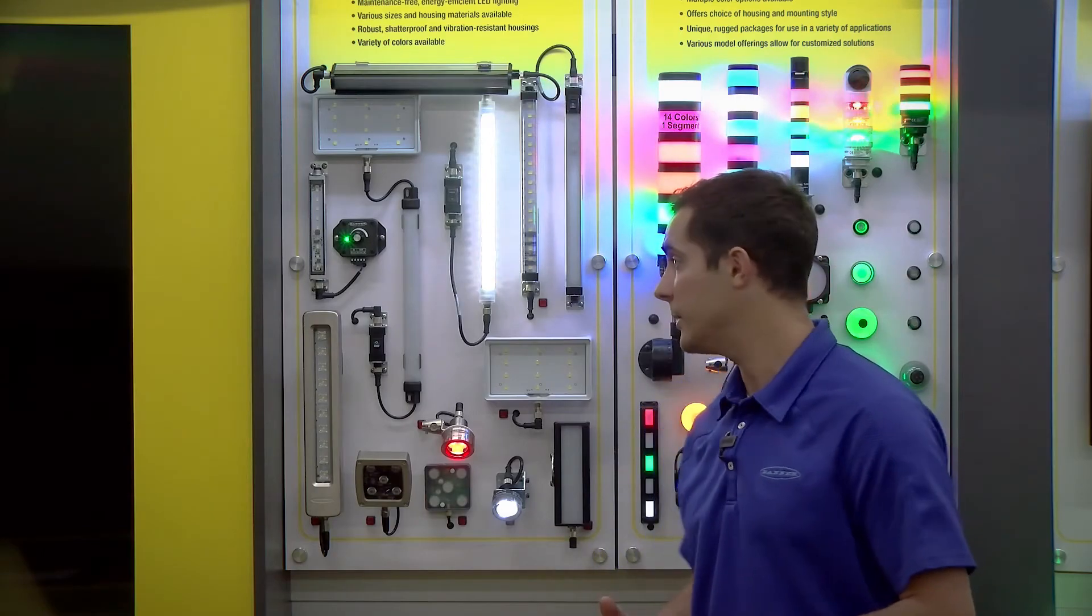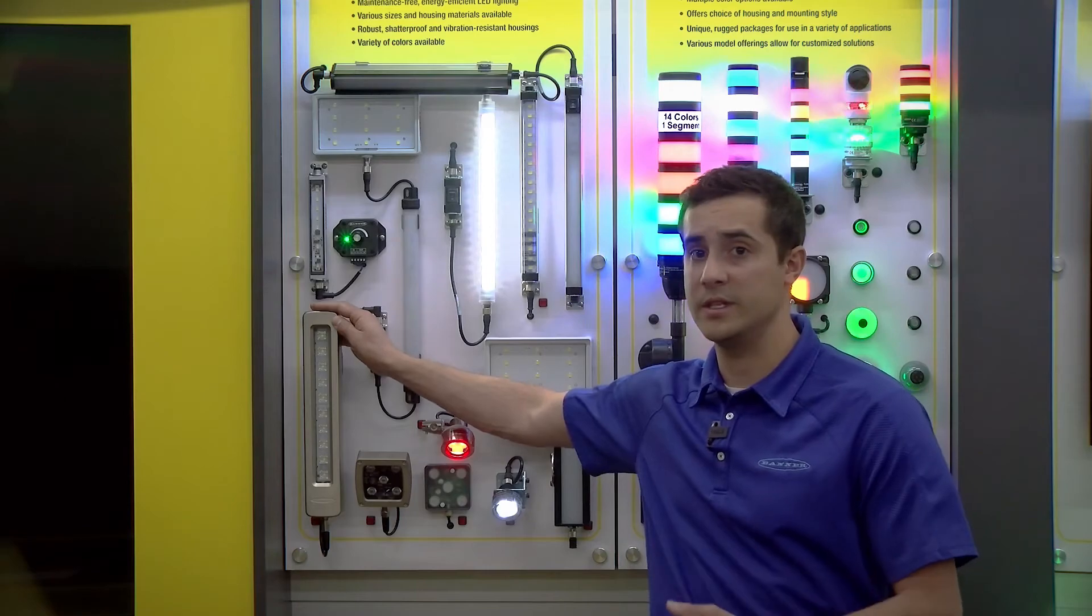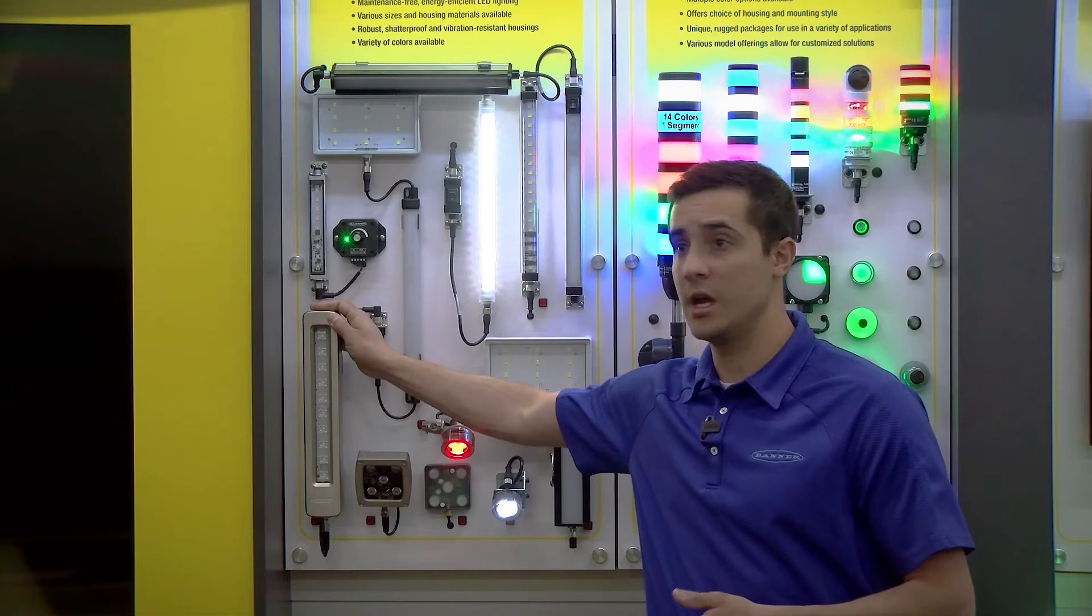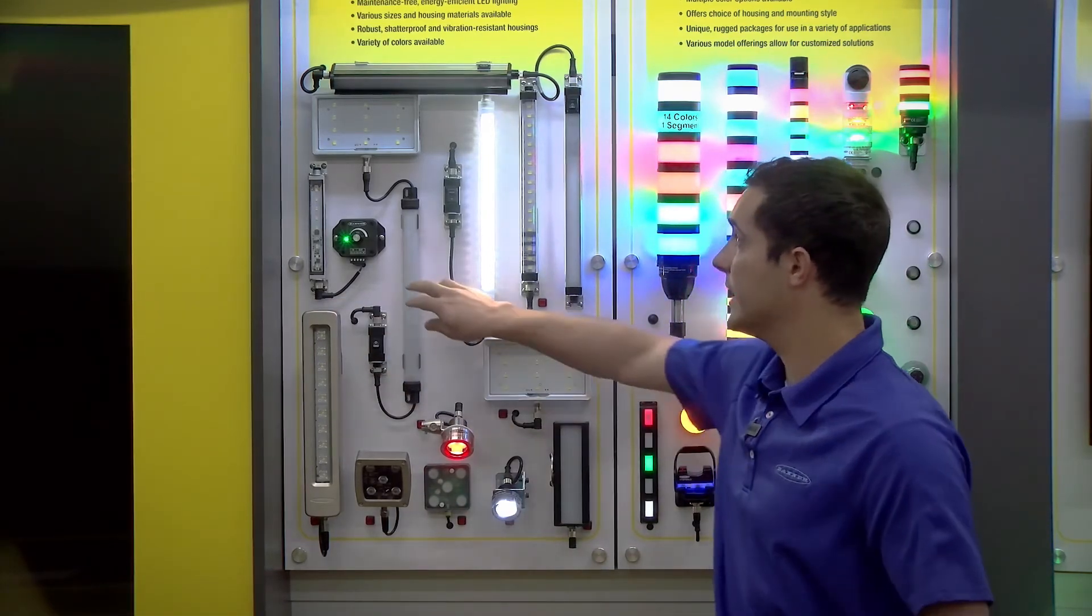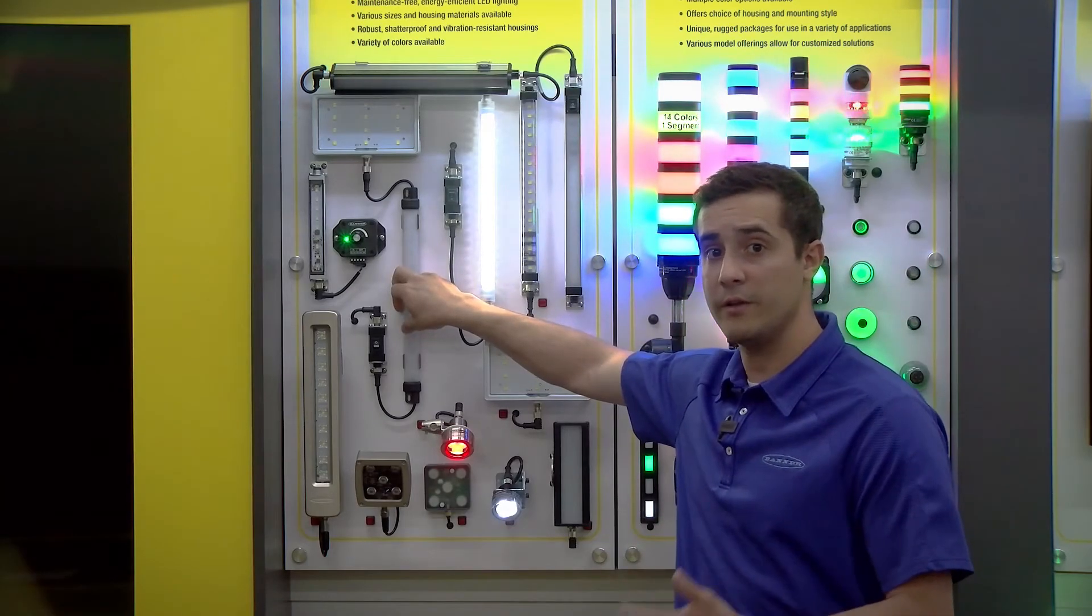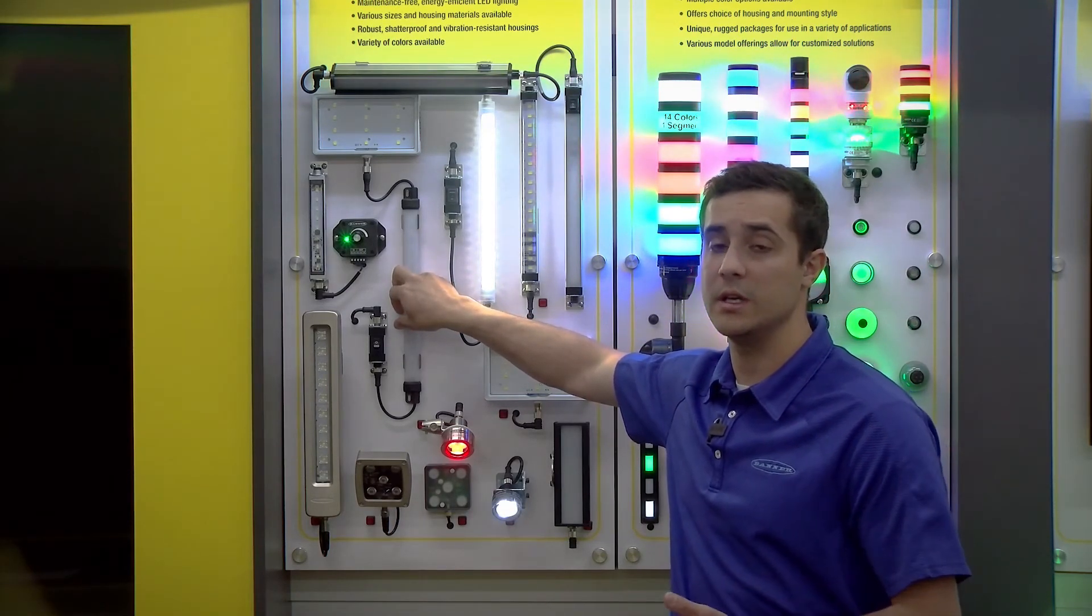And the reason for all these different form factors is to accommodate different types of industrial environments. So if you have potentially a harsher environment, we have lights for that. All the way up to fully potted IP69 lights that can withstand high temp and very demanding conditions. We also have more economical lights that can be used in panels, for instance, but are still very bright, very functional, easy to mount, and easy to integrate into existing machine hardware.